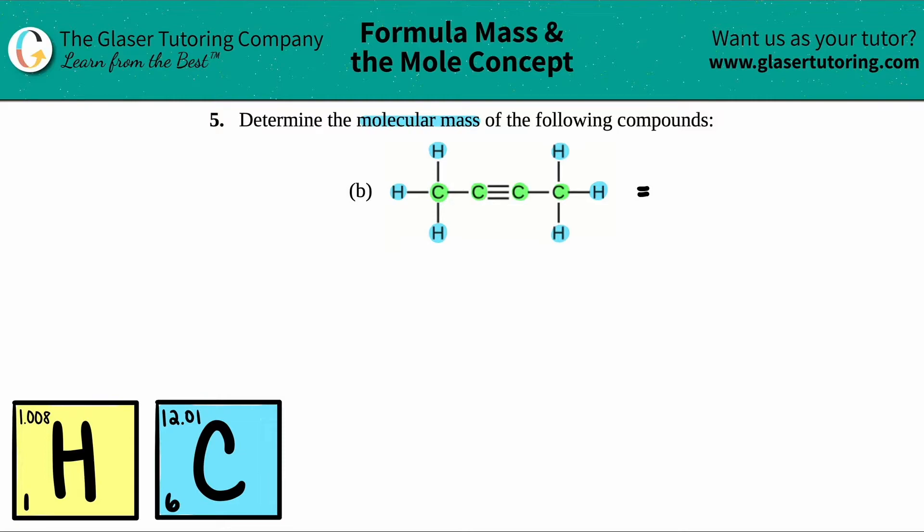So let's just group together all of the carbons and all of the hydrogens. Now how many total carbons do we see in this compound? I see four. One, two, three, and four. So I'm going to say that this is C4, and now let's figure out how many hydrogens. One, two, three, four, five, six.